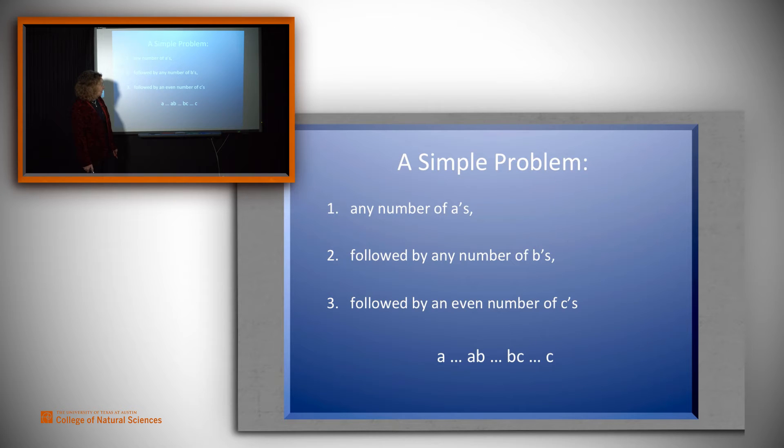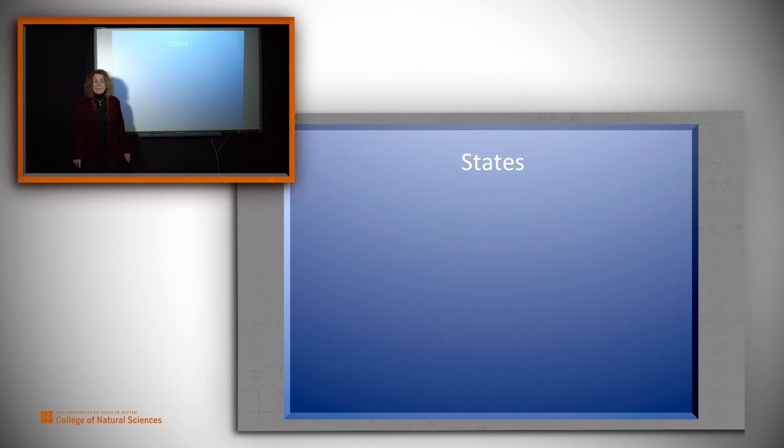So, for example, the strings could look like this. There are some A's, then there are some B's, and then there are some C's, but remember, we also have to make sure that the number of C's is even. So how do we start? We need states. What states do we need?